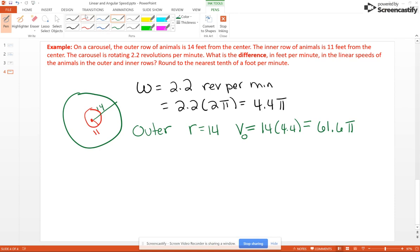Now our inner row of animals has a radius of 11 feet, so V-I for inner is going to be 11 times 4.4. I forgot the pi up there. I sure did. Let's put that in real fast. You can't forget the pi.